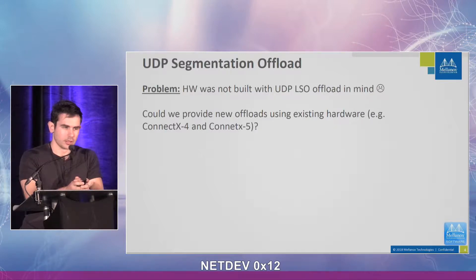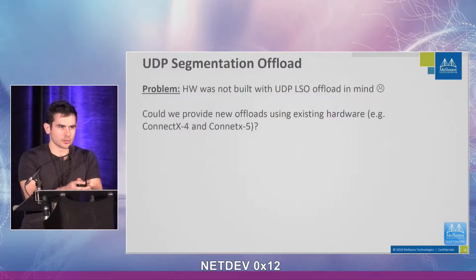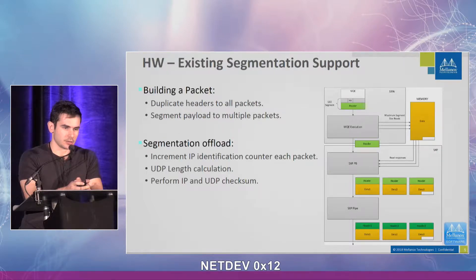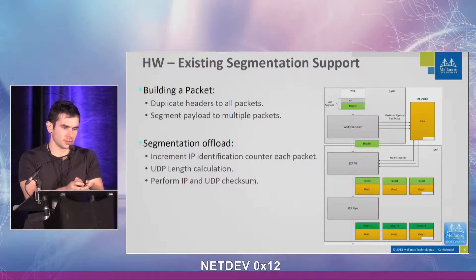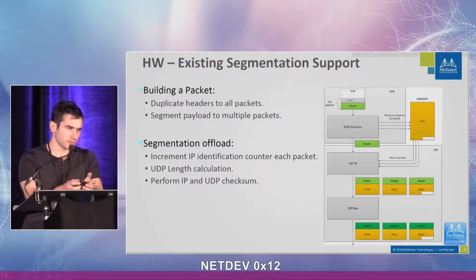UDP segmentation offload: the problem is that current hardware was not built with UDP segmentation offload in mind. Once it was introduced, we asked ourselves whether it was possible to support it with existing hardware, even though it was not designed with this purpose in mind. We started by looking at what existing hardware does when it does segmentation. It builds a packet by duplicating headers to all packets and then segmenting the payload. Then segmentation offload kicks in, which increments the IP ID for each packet, adjusts the UDP length accordingly, and updates the checksum.